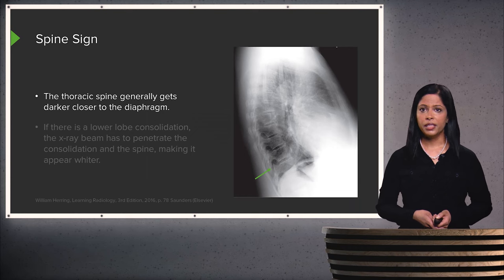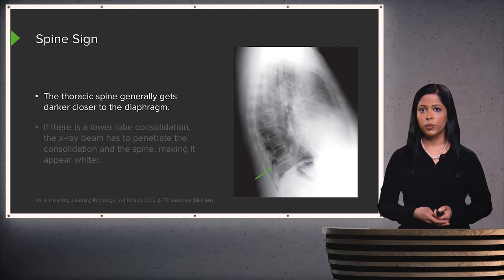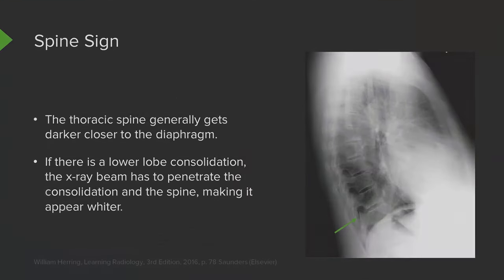The spine sign is another sign we can see with consolidation. In general, the thoracic spine gets darker as we get closer to the diaphragm. However, if there is a lower lobe consolidation, the x-ray beam has to penetrate both the consolidation and the spine, making it appear wider. This is an example of summation of shadows — when multiple shadows overlap, the area appears wider than normally expected.